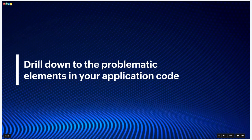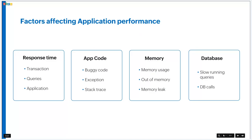Now let's drill down to the problematic elements in your application code. Some key factors affecting application performance: web server — when overloaded due to user count or load balancer issues, it causes website failure. Memory usage — high load transactions cause out-of-memory exceptions, or when users access many pages per second or due to high thread usage. App code — buggy code causes performance issues, along with slow DB calls, method calls, and web service calls.